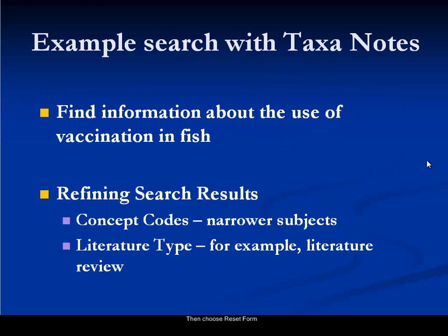My example search with taxonotes will be finding information about the use of vaccination in fish. I'll also look at the various ways you can refine your search results using concept codes, which are narrower subject areas than the major concepts, and also by literature type — for example, you can limit to the literature type of literature review. These are very useful review articles that are a summary of a research area.